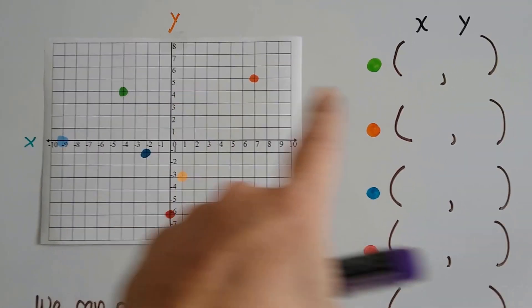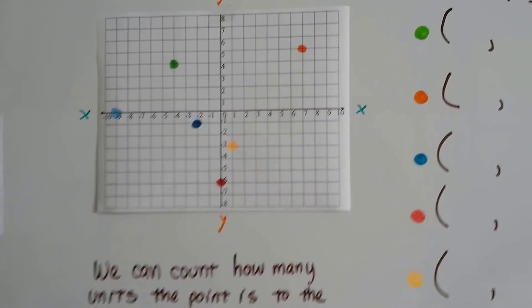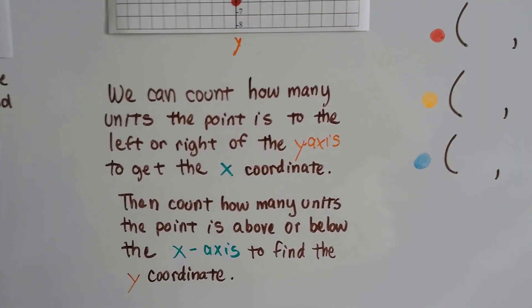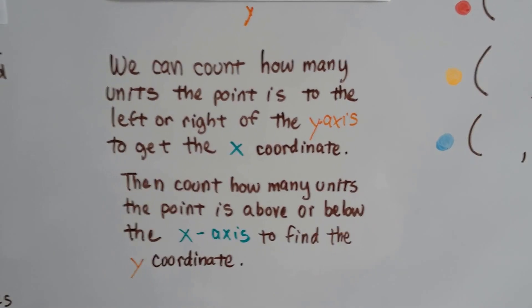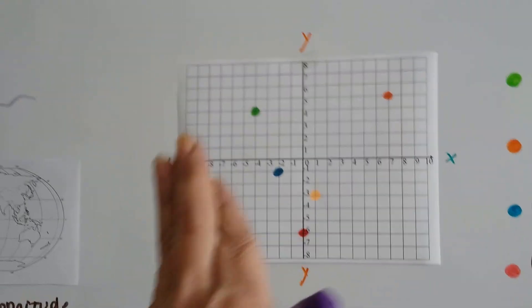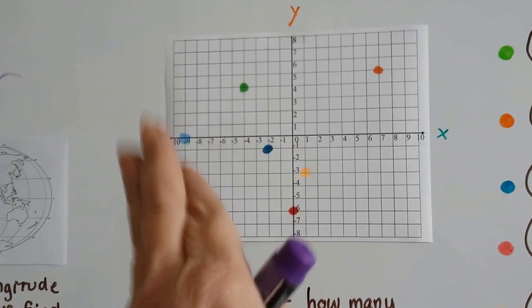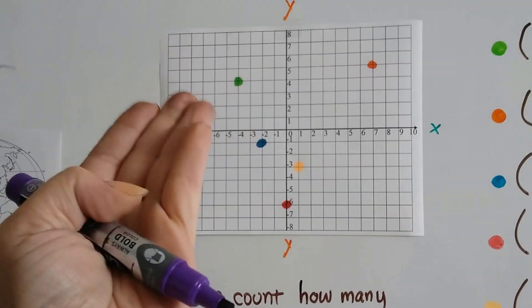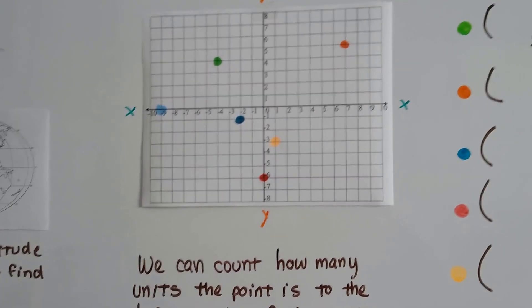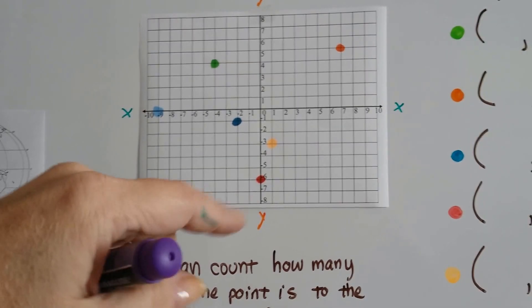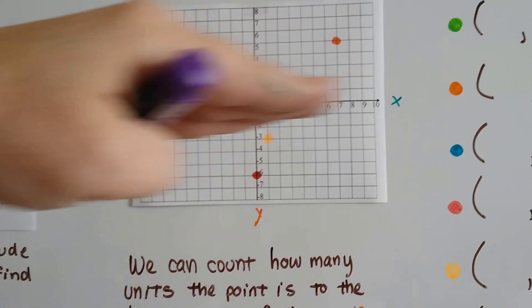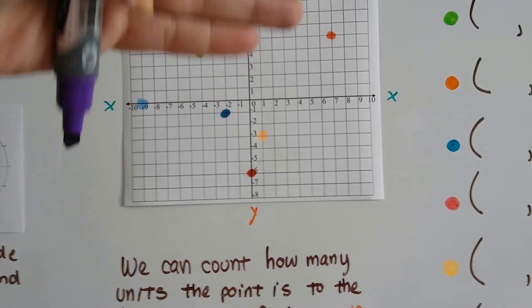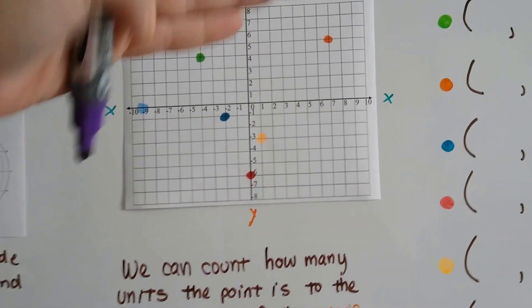So let's start with this lime green one. What's the x and y values for this lime green one? Well, we can count how many units the point is to the left or the right of that y-axis to get the x-coordinate. So we count how many it's to the left or right of the y-axis, this side or this side. And then that'll give us our x-coordinate.